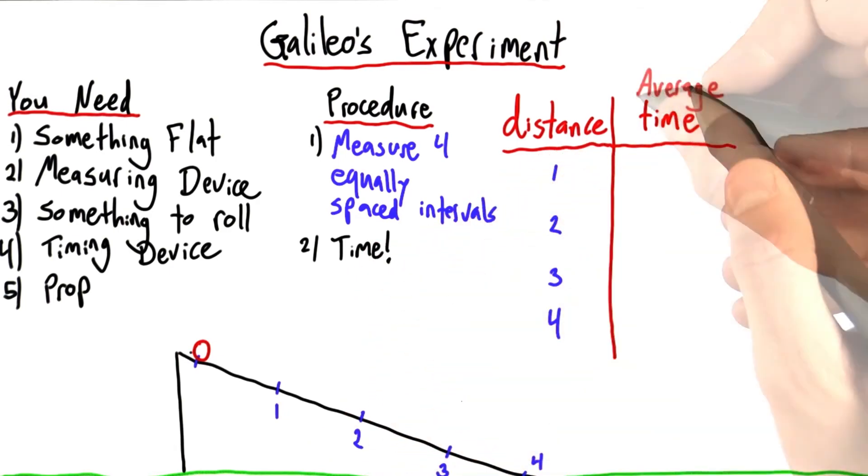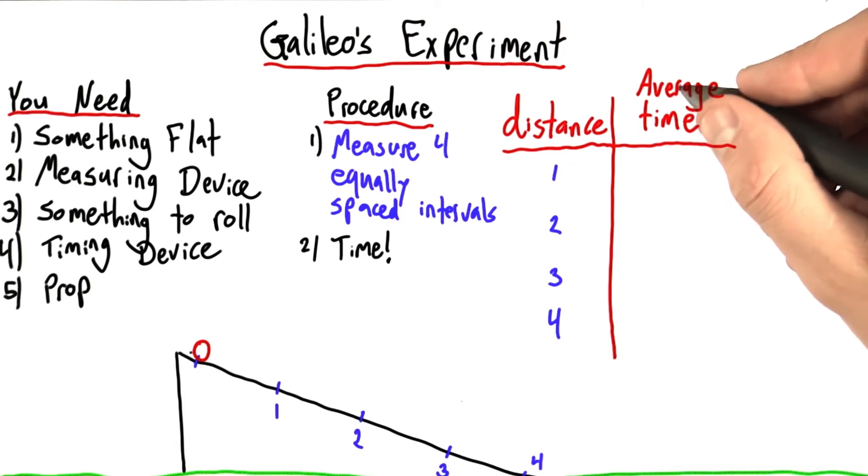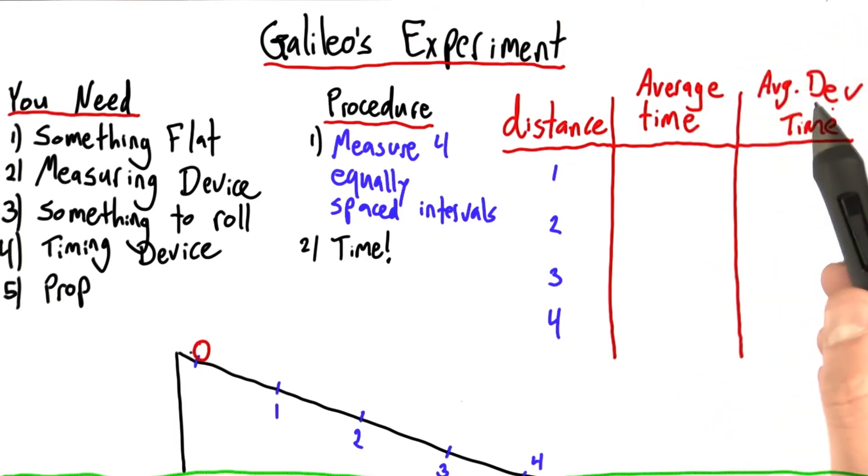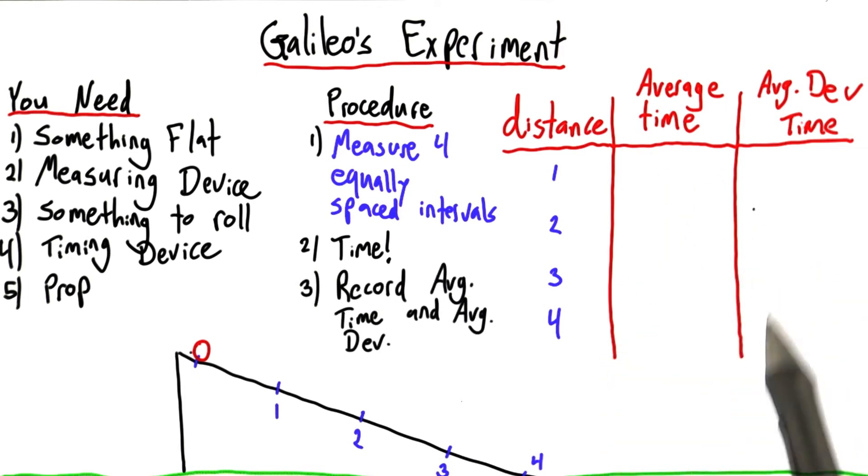What you'll then enter into this data table is your average time and the average deviation of those time measurements. You'll enter those numbers here, since you now know how to compute averages and average deviations.